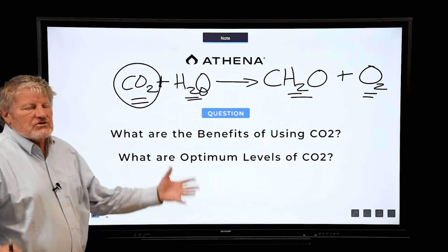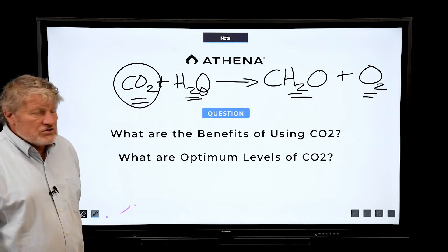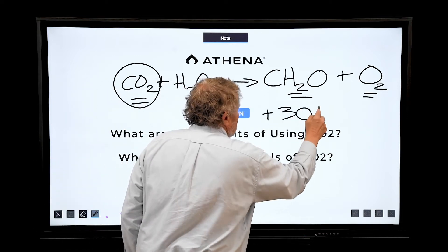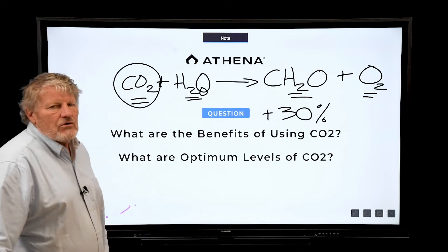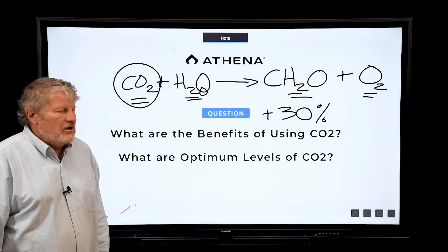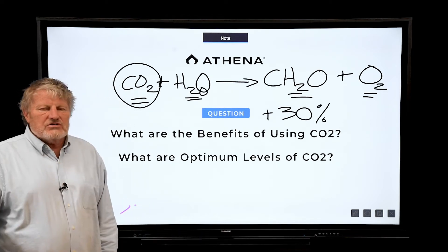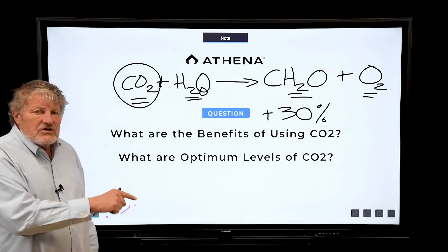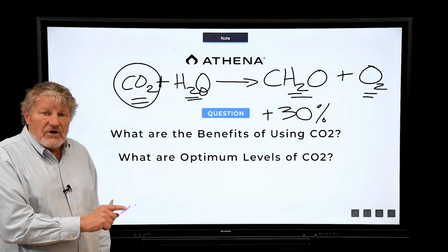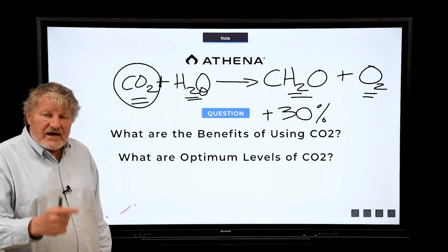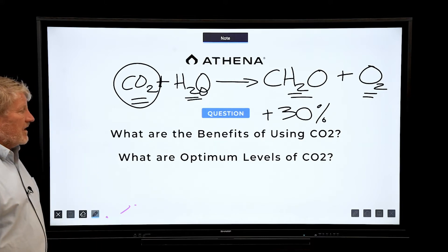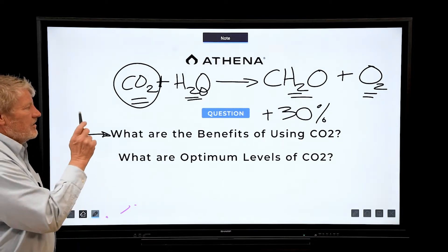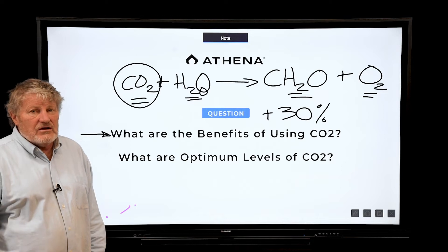If we get CO2 elevated, it makes photosynthesis go faster — and not just a little faster. All of our studies indicate about 30 percent higher yields from CO2 enrichment, and that's easily cost effective. For cannabis, you can either have hot CO2, which is burning by combustion, or compressed gas, which we call cold CO2, to elevate the CO2.